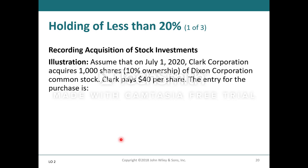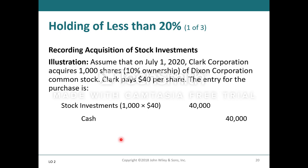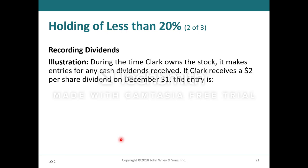Illustration: On July 1st, 2020, Clark Corporation acquires 1,000 shares — 10% ownership — of Dixon Corporation common stock at $40 per share. The entry for the purchase is a debit to stock investments for $40,000 and a credit to cash for $40,000. During the time Clark owns the stock, it records any cash dividends received. If Clark receives a $2 per share dividend on December 31st, the entry is a debit to cash for $2,000 and a credit to dividend revenue for $2,000.